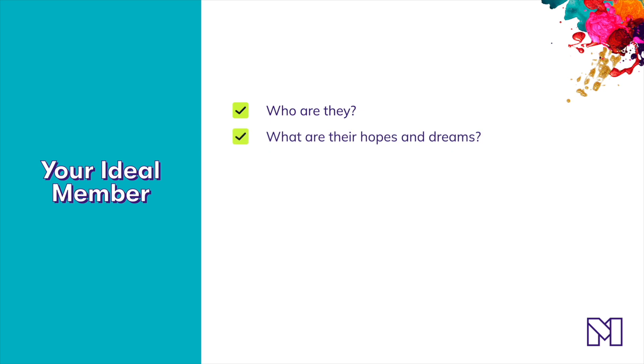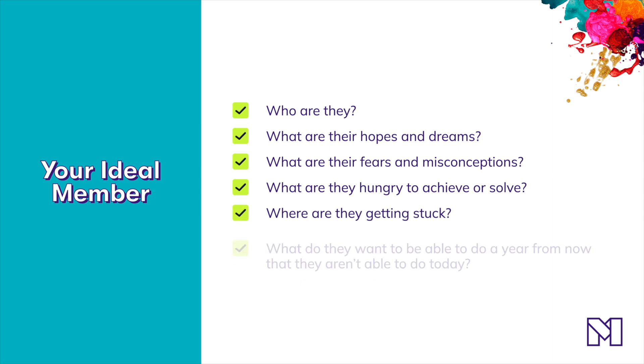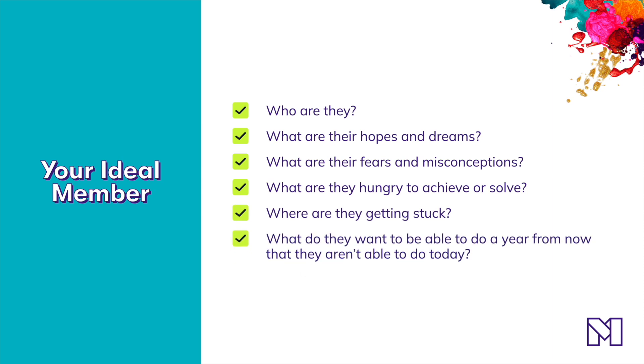Ask yourself: Who are they? What are their hopes and dreams? What are their fears and misconceptions? What are they hungry to achieve or solve? Where are they getting stuck? What do they want to be able to do a year from now that they aren't able to do today? And use the words that they use — the words they use to describe the results they're trying to achieve, the obstacles they anticipate, what they're most excited about, or where they're starting from. This simple reframing from what you want to say to what your ideal member is most interested in is the key to moving from emails that stay unread to emails that are opened, saved, or even shared.